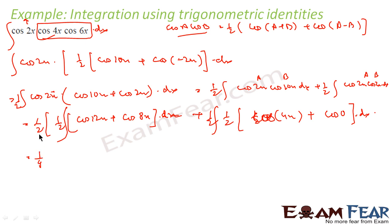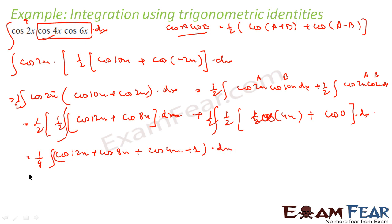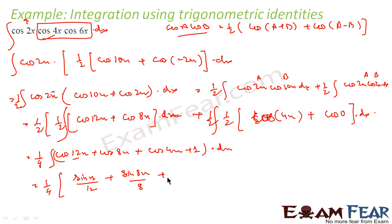½ times ½ gives 1/4, and everything combines to: 1/4 ∫[cos 12x + cos 8x + cos 4x + 1] dx. This is now a simple integration — everything is addition and integration of cos x we know gives sin x. So this becomes: sin 12x/12 + sin 8x/8 + sin 4x/4 + x, and that is my answer.